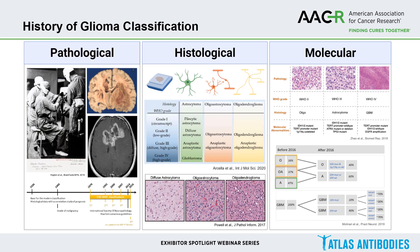Up until 2007, all glioma tumors were classified by histology alone, and were graded by severity, grade 1 through 4. The three classes were based on cell morphology and include astrocytoma, oligodendrocytoma, and a third class, oligoastrocytoma, which originated as a mixture of astrocytes and oligodendrocytes. At this time, all tumors classified as grade 3 and 4 underwent surgery, followed by radiation and chemotherapy. The only available chemotherapy was temozolomide, an alkylating chemotherapy.